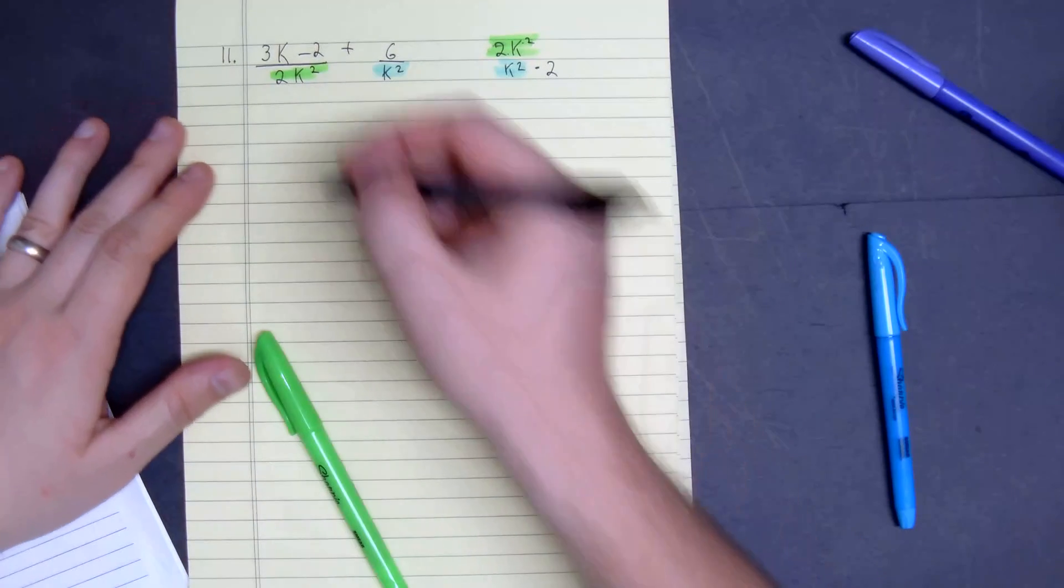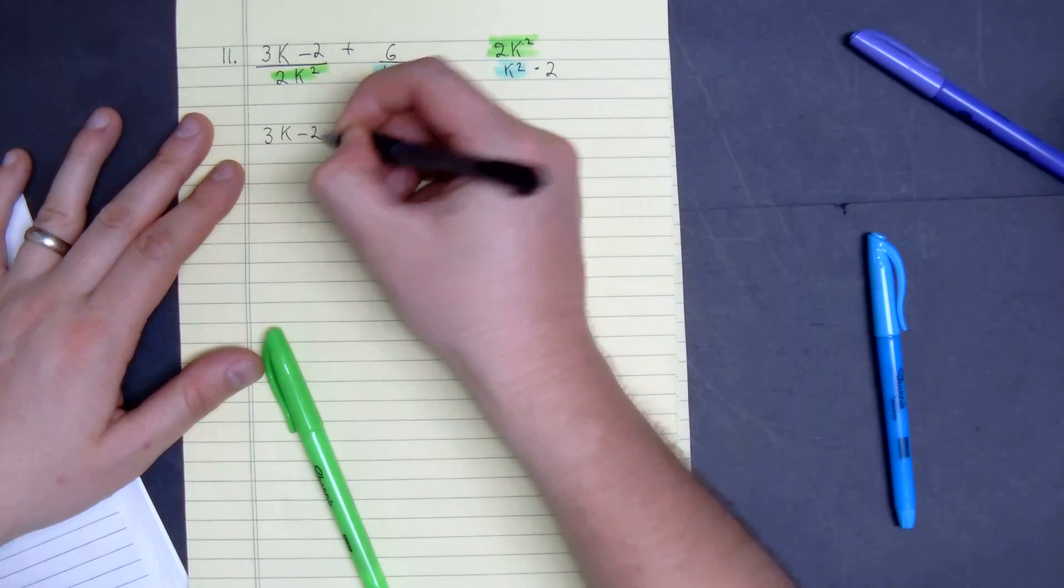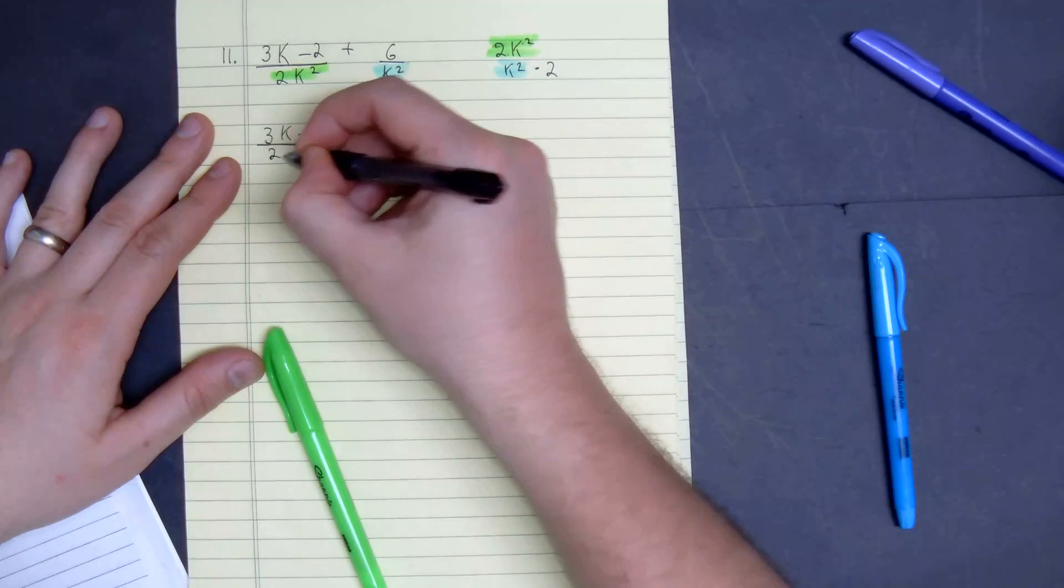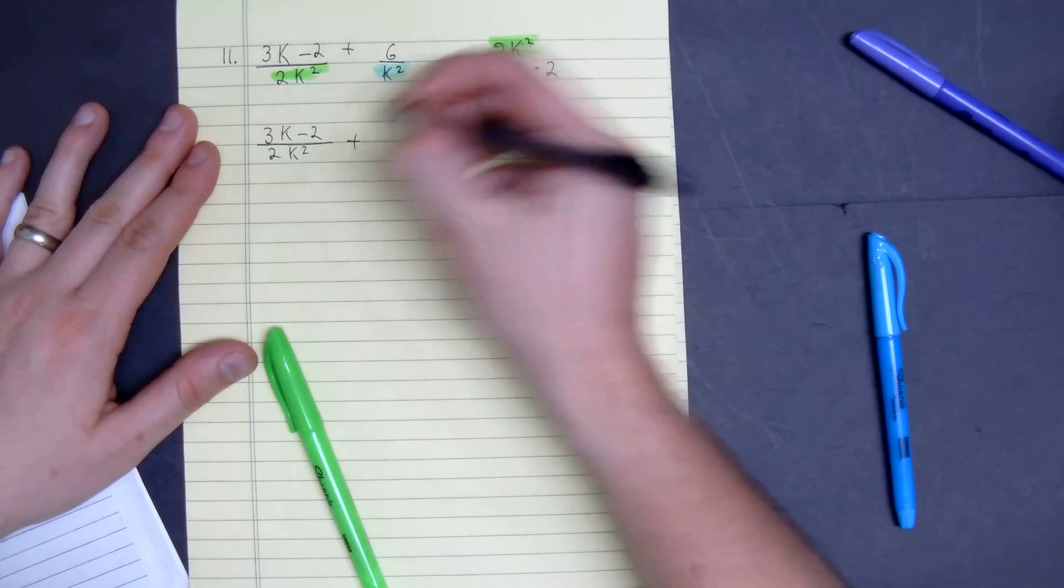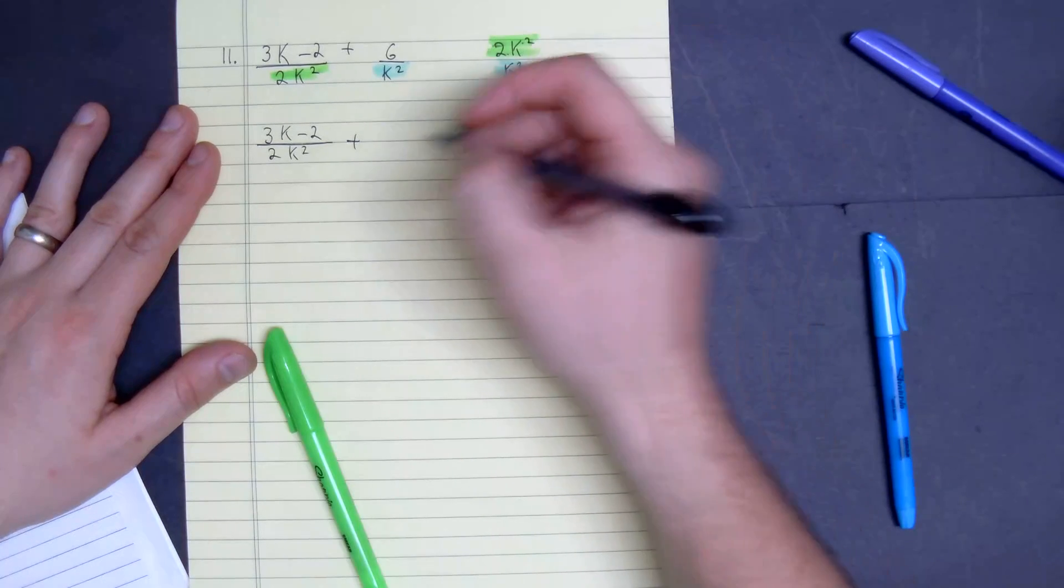We're good to go. So we get right here, 3k minus 2 divided by 2k squared. Nothing changed with the green for the LCD. Plus, we need to multiply the whole thing by 2.